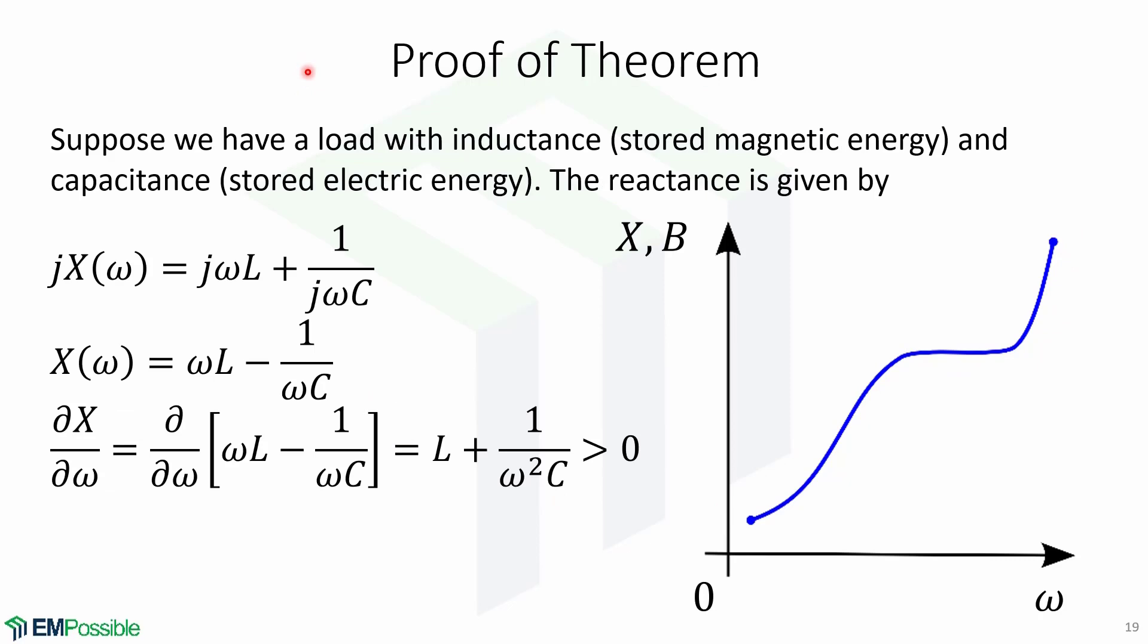Now to prove the theorem, suppose we have a load with inductance which is stored magnetic energy and capacitance which is stored electric energy. In this case, the reactance is given by this expression, jX of omega equals to j omega L plus 1 over j omega C. Getting rid of j gives us this expression. If we take the derivative of this function with respect to omega, we obtain this.